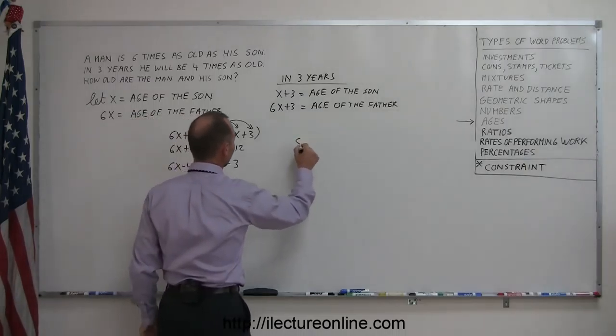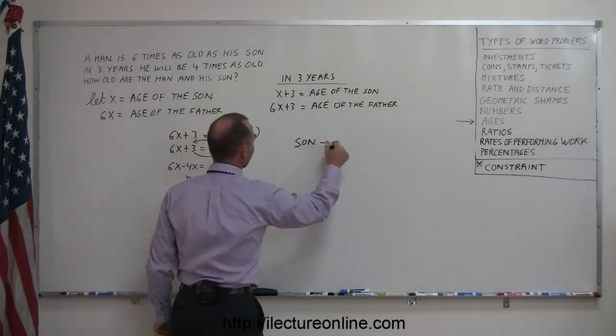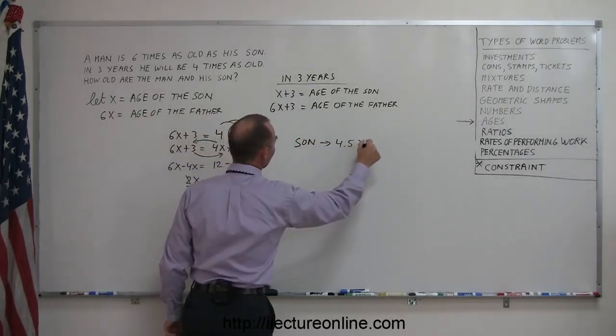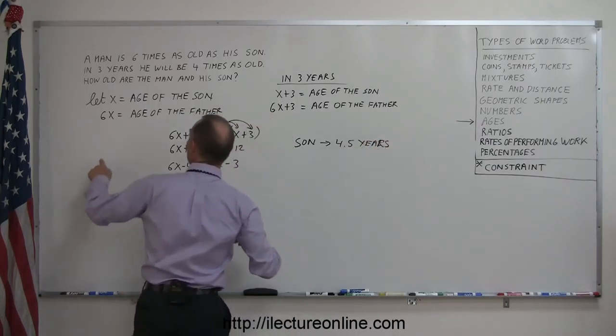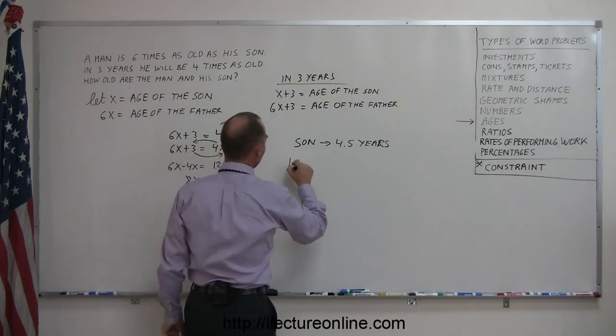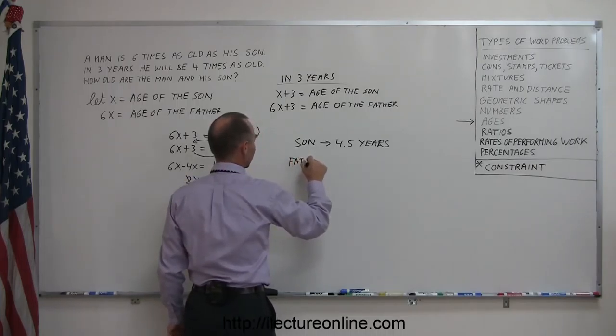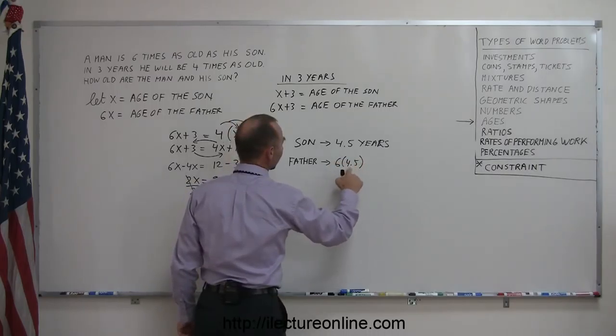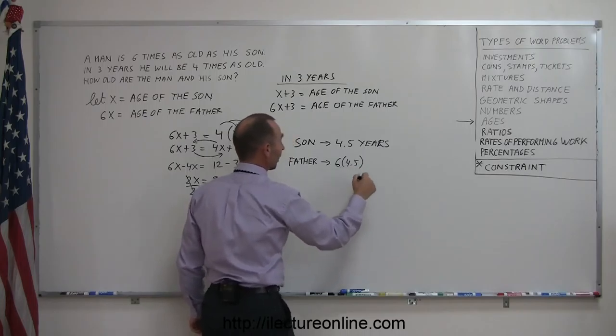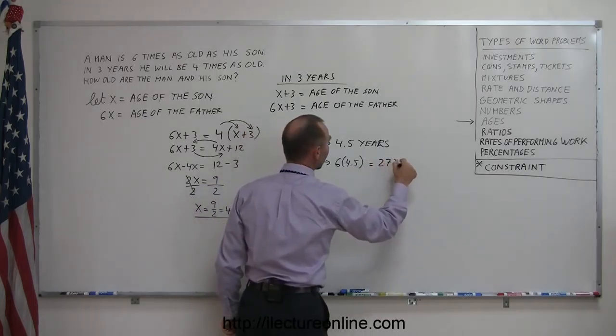How old is the father? Six times as much. So we could say son, four point five years. And six times that, so the father, six times four point five. Six times four is twenty-four, six times point five is three, so that's twenty-seven years old.